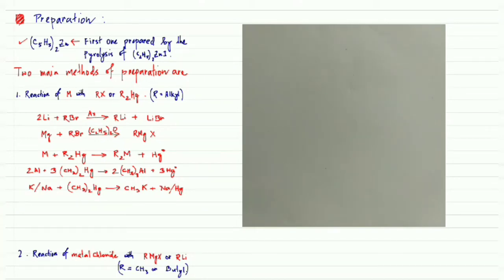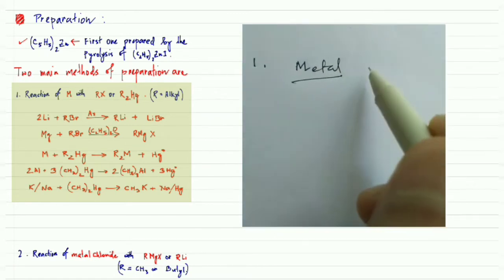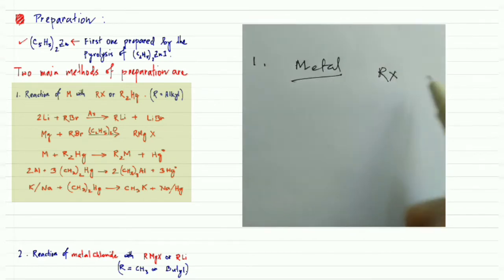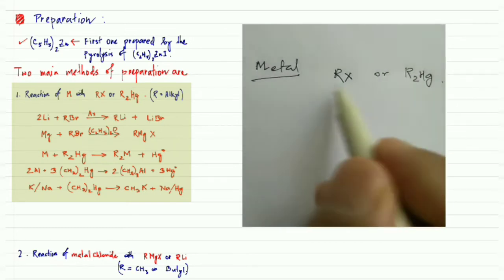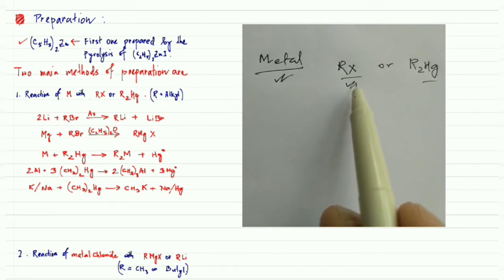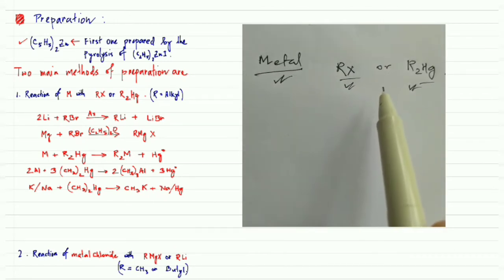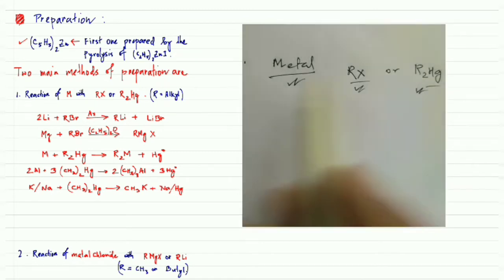Let us discuss the preparation methods of organometallic compounds of main group elements. There are mainly two types of preparation methods. The first one is the reaction of a metal with an alkyl halide or with dialkyl mercury to form the organometallic compound.